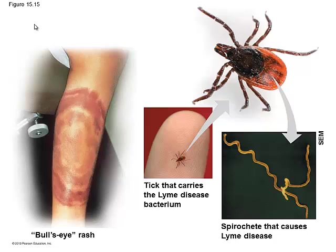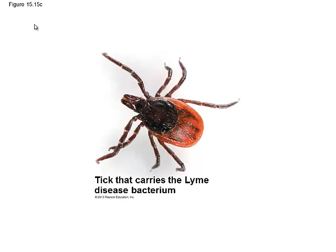Some of the toxins this spirochete gives off attack joints. The classic symptom is a bullseye rash, but not everybody exhibits that — sometimes if you get bit on the head you won't see it. There are different antibiotics that have been developed beyond penicillin. Sometimes they can be super effective and sometimes they can be nasty too.